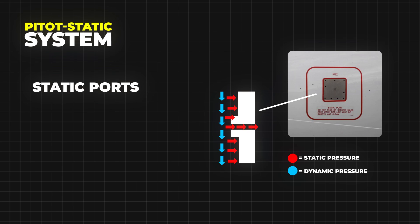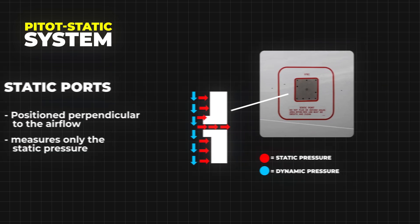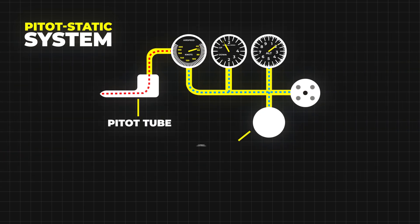The static port, positioned perpendicular to the airflow, measures only the static pressure of the undisturbed air surrounding the aircraft.